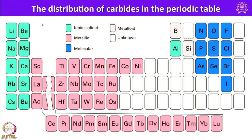Looking at the distribution of carbides in the periodic table: saline ionic carbides are formed by group 1 and group 2 elements and to an extent by aluminum. Molecular carbon compounds are formed by p-block elements such as groups 15, 16, and 17, which form covalent carbon-to-element bonds. Metallic carbides are formed by transition metals, and metalloid carbides are formed by boron and silicon. This classification is based on the nature and chemical as well as physical properties.